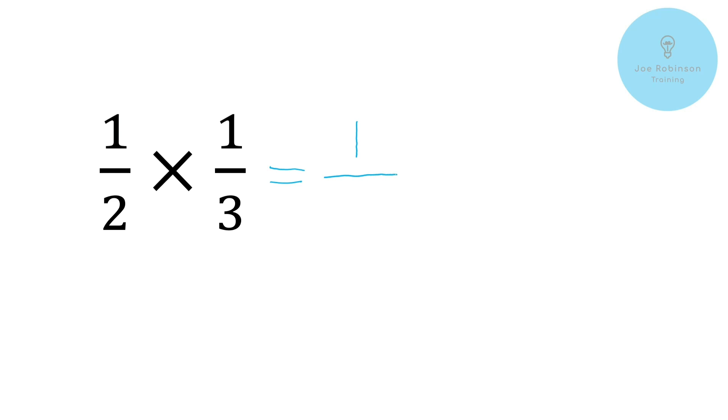And then we just multiply the bottom two numbers together, two times three. Two times three gives us six and that goes on the bottom there. So there you go, one half times one third is one sixth.